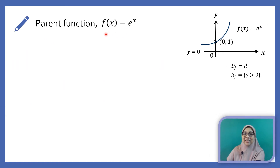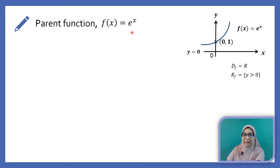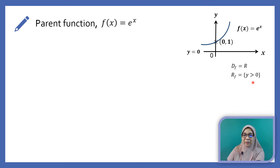Let's try to graph the exponential function. Take note, the exponential function can also be to any base, not necessarily to base e — it can be any value greater than 1. Here is the shape of the parent function e to the power of x, with y equals 0 as the horizontal asymptote. The domain is for all x in ℝ, and the range is y greater than 0.